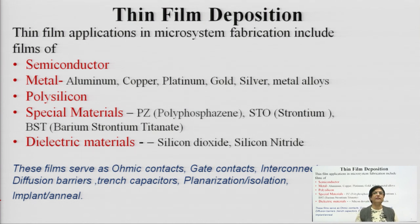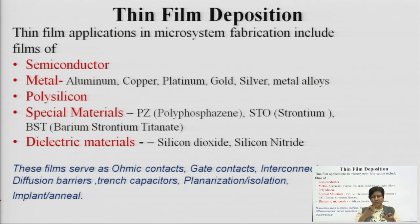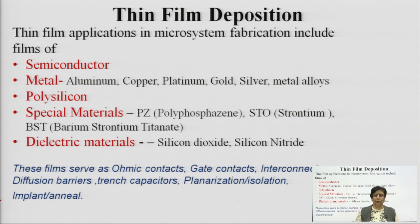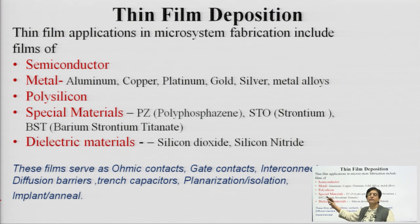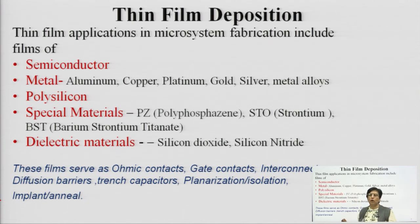What materials are deposited in the form of thin films? One material is semiconductor — for example, silicon deposited onto silicon, which we have seen as epitaxial layer growth. Apart from that, metals are deposited for interconnects, contact pads, and establishing contacts between metallization layers. Metals such as aluminum, copper, platinum, gold, silver, and different metal alloys are deposited.